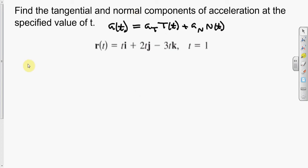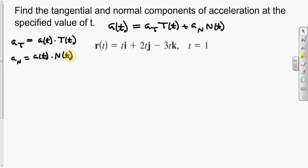To do that, we have to find basically everything. We have to find r prime, we have to find the norm of r prime, then the tangent vector, then from there we find the normal vector, then after that we find the acceleration. Then we take the dot product of the acceleration and the tangent to find a sub T. A sub T is the dot product of the acceleration vector with the tangent vector, and then a sub N is the dot product of the acceleration with the normal vector.